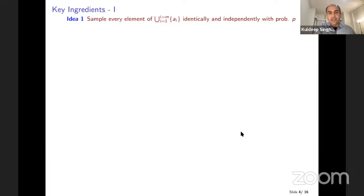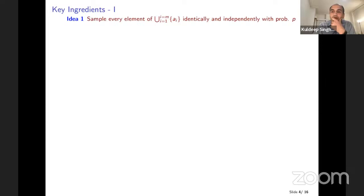Going back to our streaming setting: we have elements and we are trying to find the cardinality — the number of elements in the union of all these elements. We should be able to pick every element of this union identically and independently with probability P. If we could do that, we'd be able to compute the size of the union.